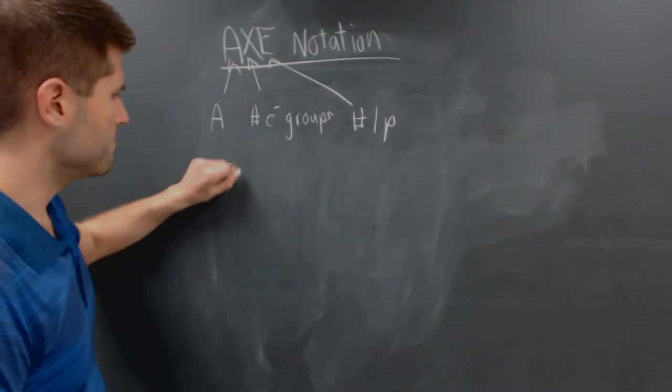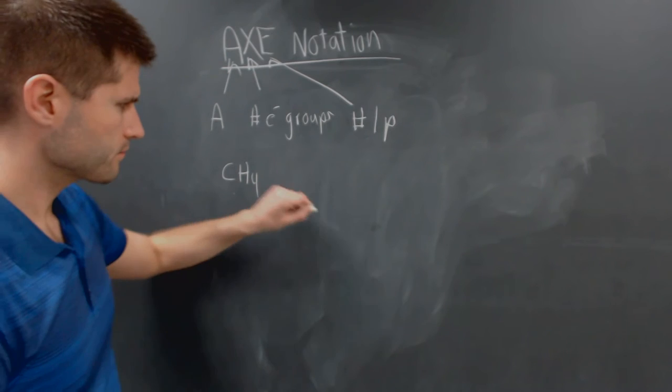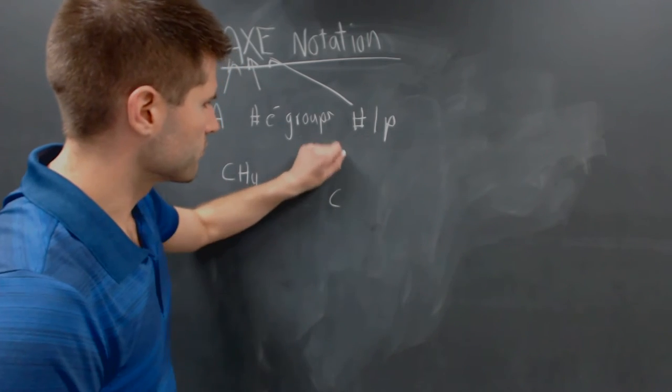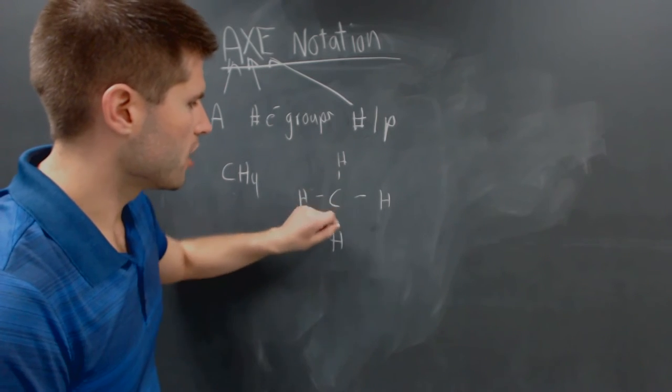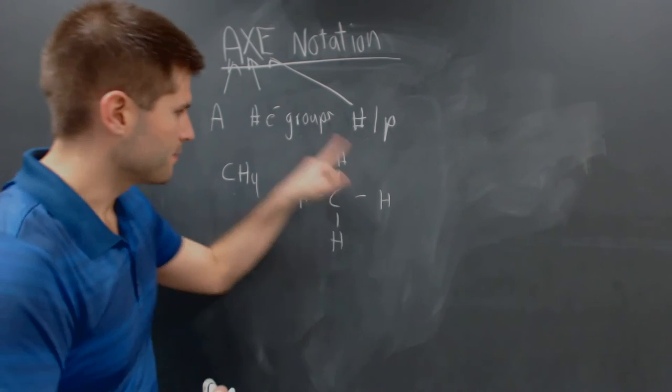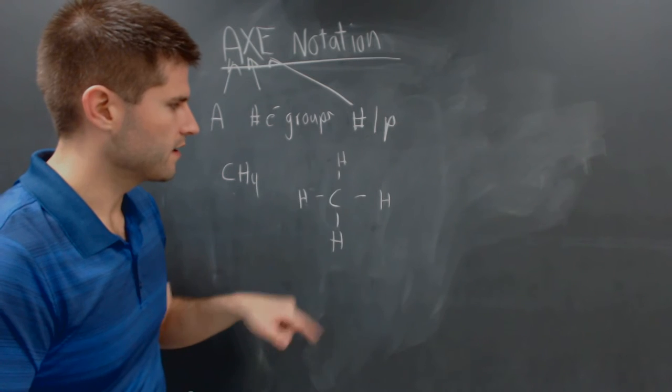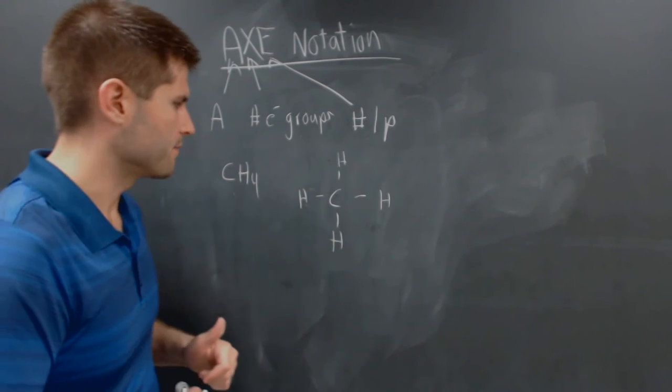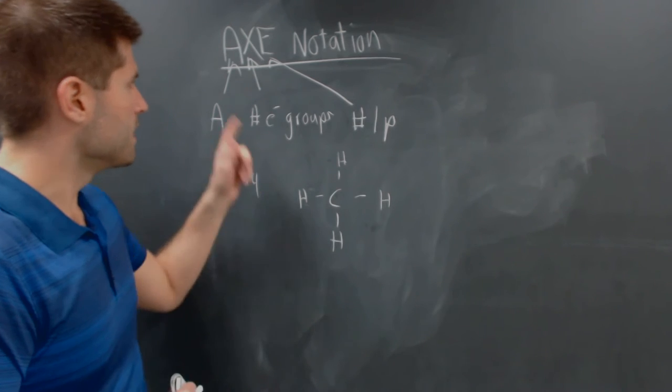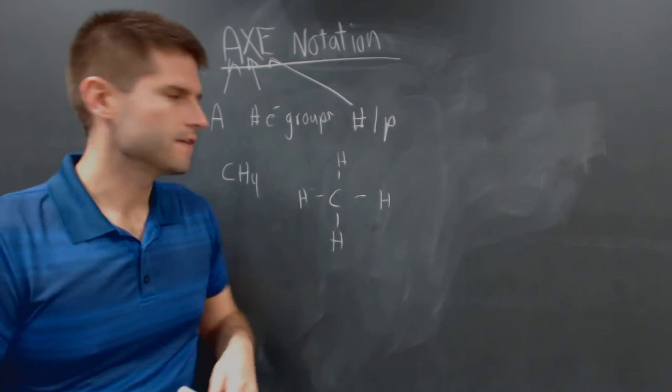So let's look at methane, CH4. We have a central carbon. We're going to surround that by four different hydrogens. And this is something that we already know how to draw. Everything is happy here. Each hydrogen has two electrons. The carbon has a total of eight shared electrons. It's all happy and good to go. Now let's write out the AXE notation for this.